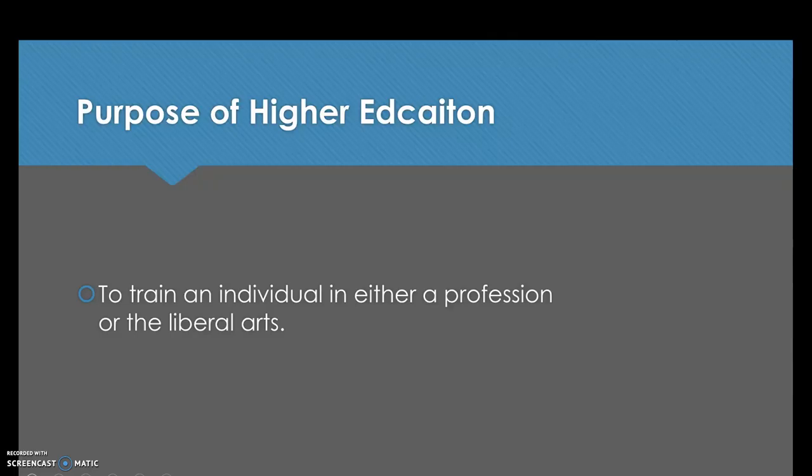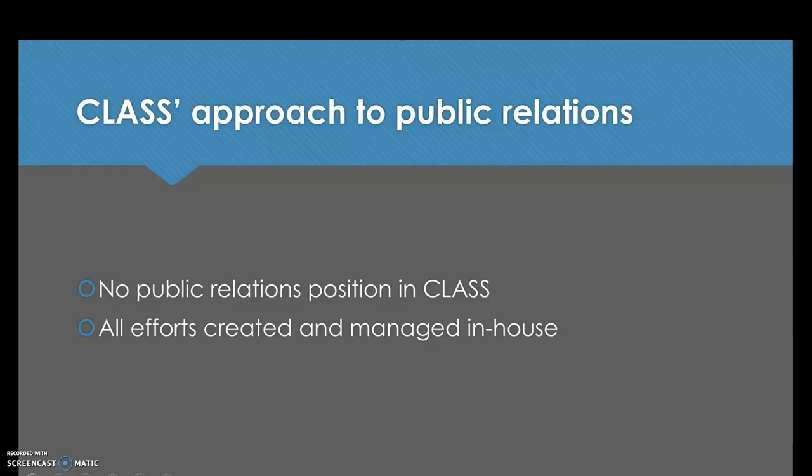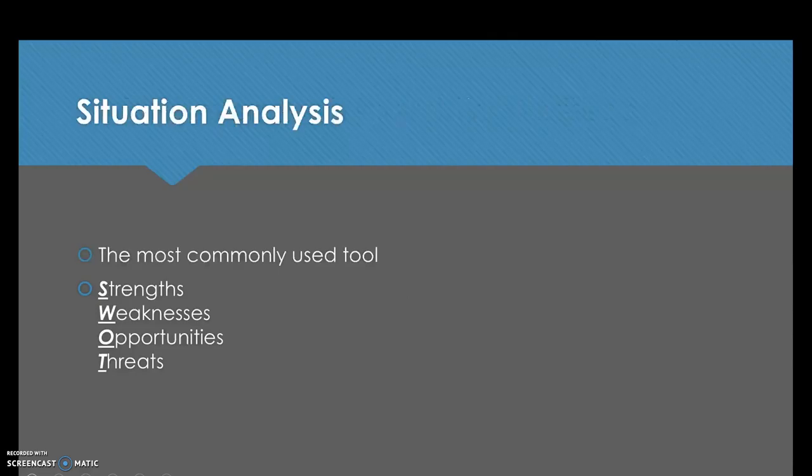The College of Liberal Arts and Social Sciences at Belmont is part of the institution of higher education, whose purpose is to train an individual in a profession or in the liberal arts. Now let's look at how CLASS approaches public relations. There is no public relations position in the college — it is a shared responsibility among all its members, and all efforts are created and managed in-house. This is certainly an area to improve.